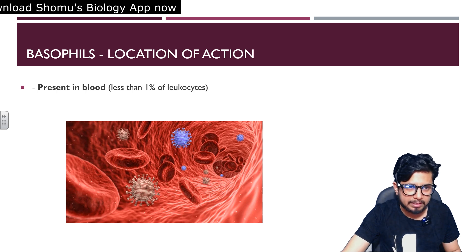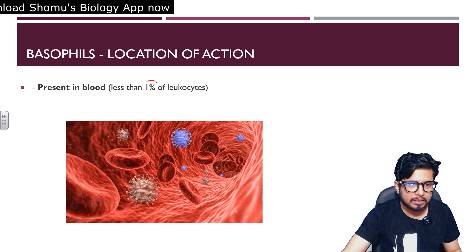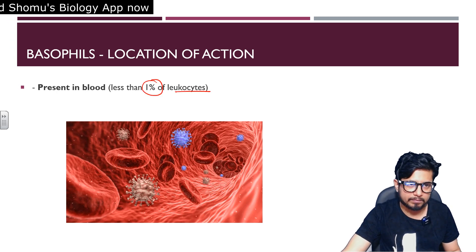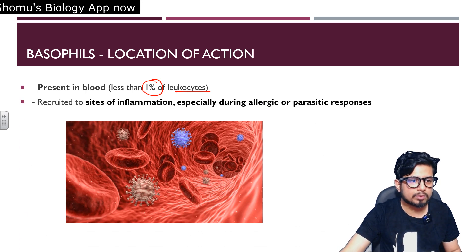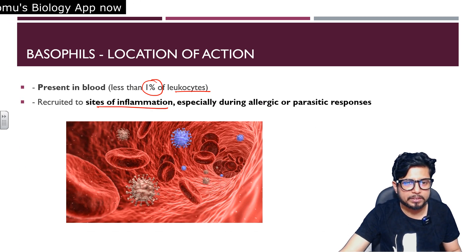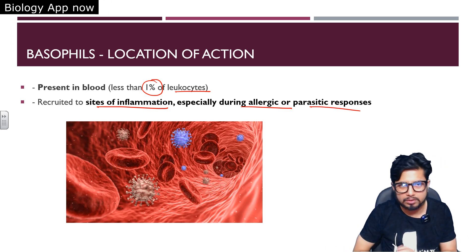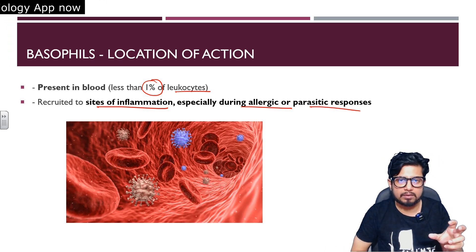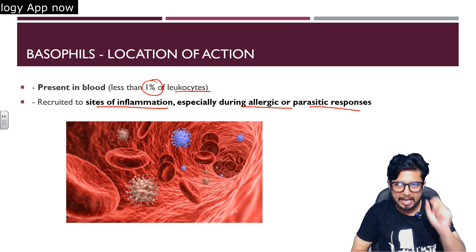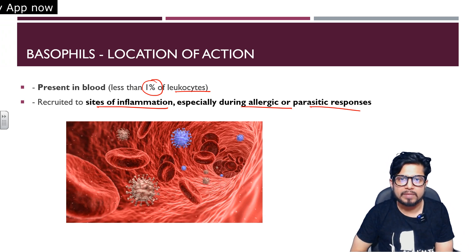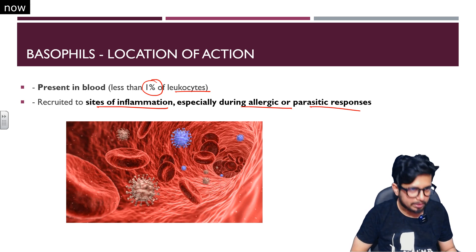Looking at the location of action for basophils: they are present in the blood, making up less than one percent of leukocytes. They are recruited to sites of inflammation, especially during allergic and parasitic responses, where they cause primary IgE-mediated allergic reactions.